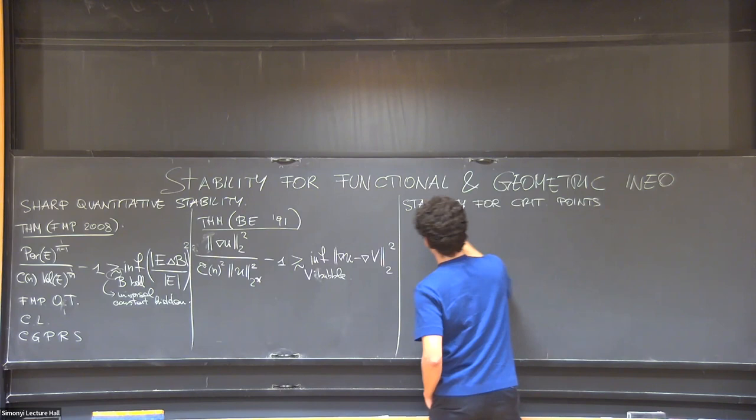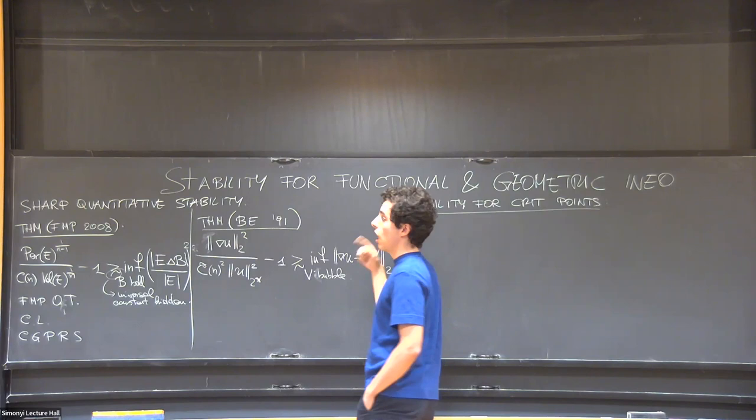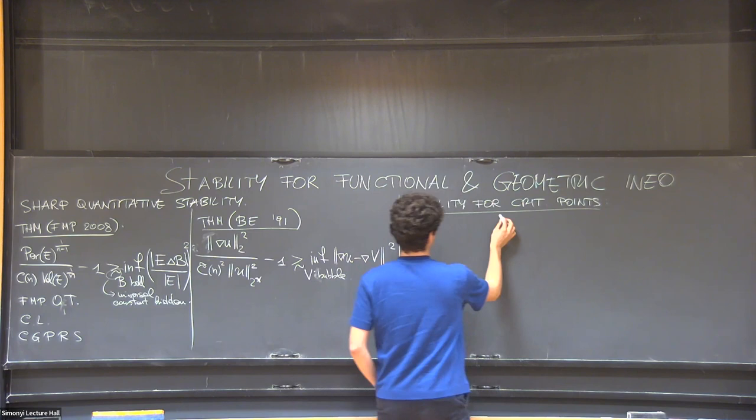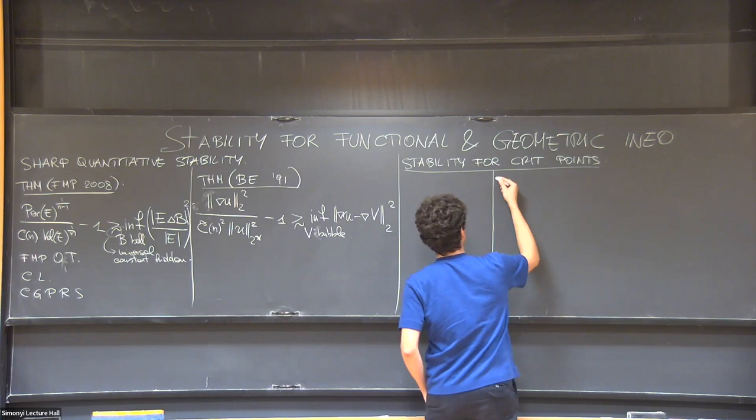But then one can ask himself the same questions for critical points. So the question here, at least qualitatively, is if I'm almost solving the Euler-Lagrange equations, am I close to a critical point which happens to be minimizers?